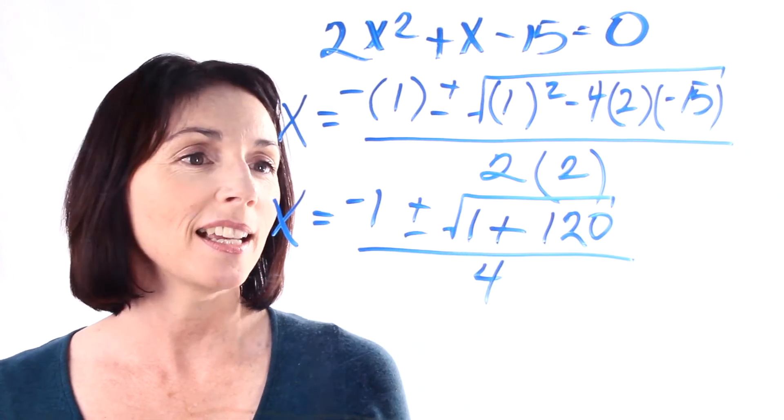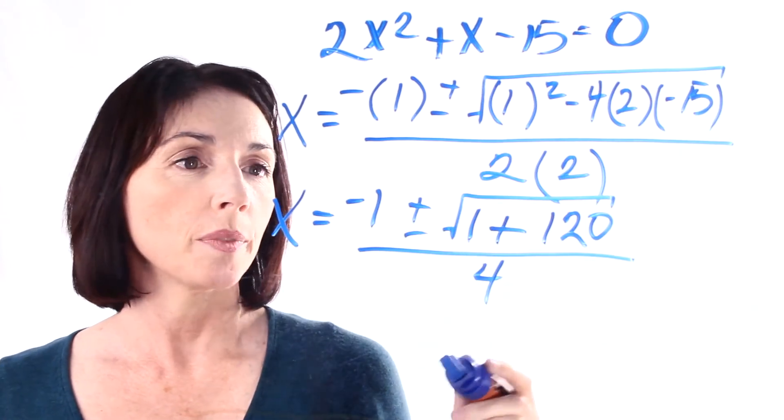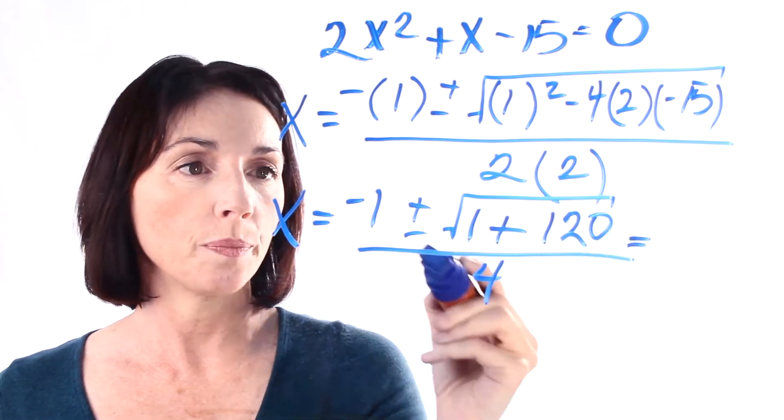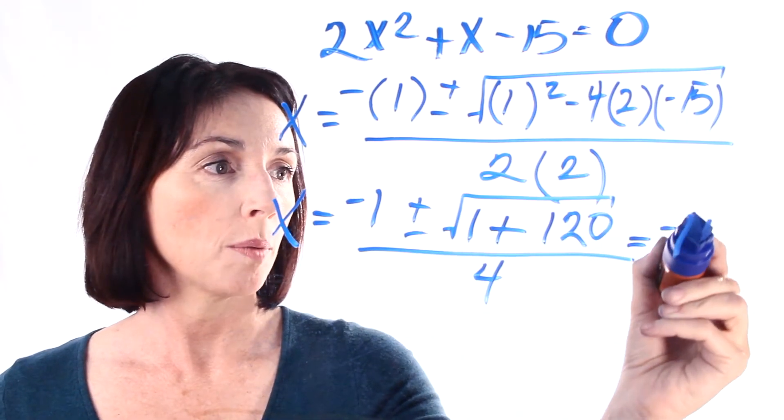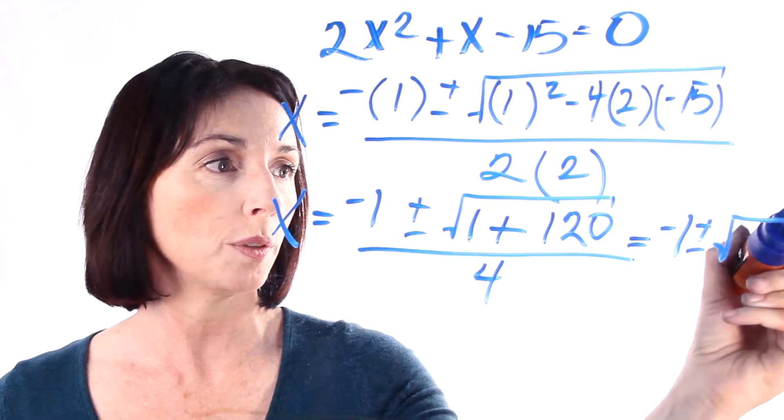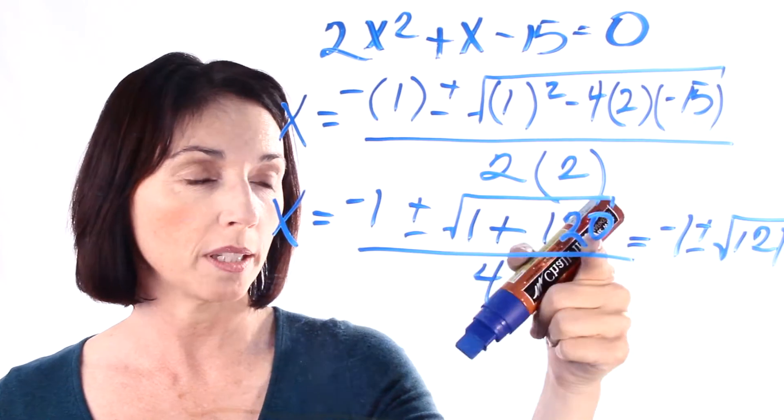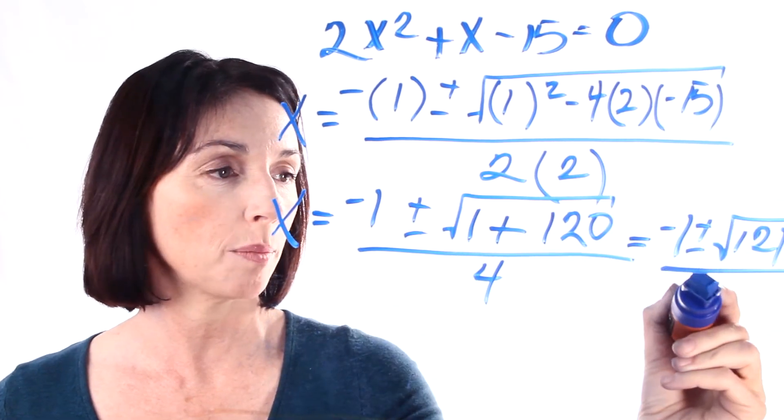It already looks a lot better, doesn't it? So let's go on from here. So this is equal to minus 1 plus or minus the square root of 121, and all of that is divided by 4.